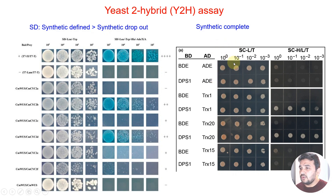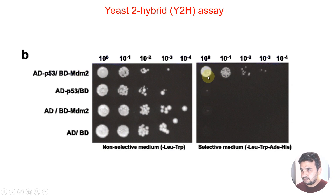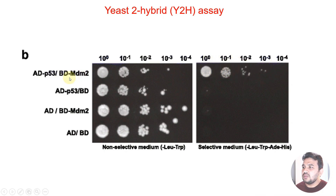Here is another example. In the non-selective medium and selective medium, P53 and MDM2 are growing at further dilutions, meaning these two proteins are interacting. All other combinations shown are not interacting.